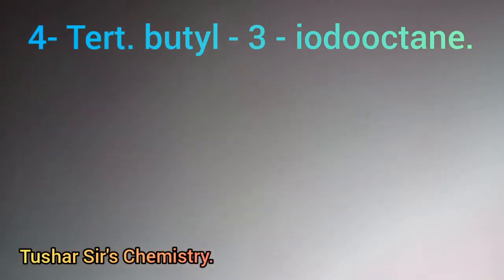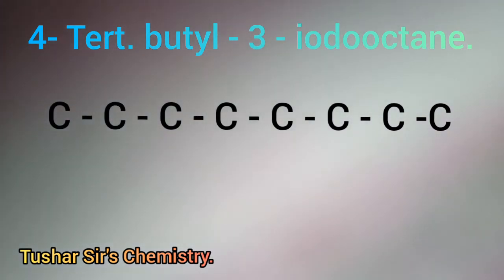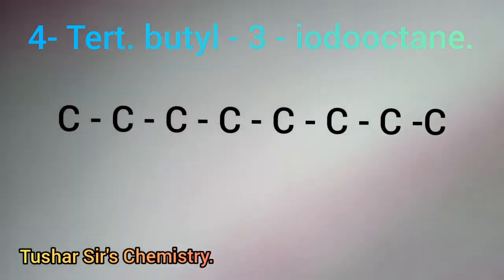Hello, let me draw the structure of 4-tert-butyl-3-iodooctane. To draw the structure of this organic compound, we have to write eight carbon atoms on the screen, because in octane there are eight carbon atoms.